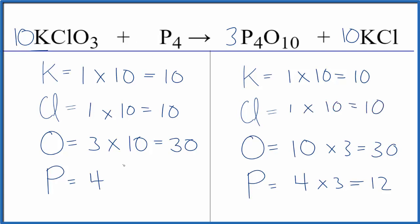We left the phosphorus to last. 4 times 3 that would equal 12. That would balance the equation. So let's put a 3 in front of the P4. 4 times 3 gives us 12. This equation is balanced.